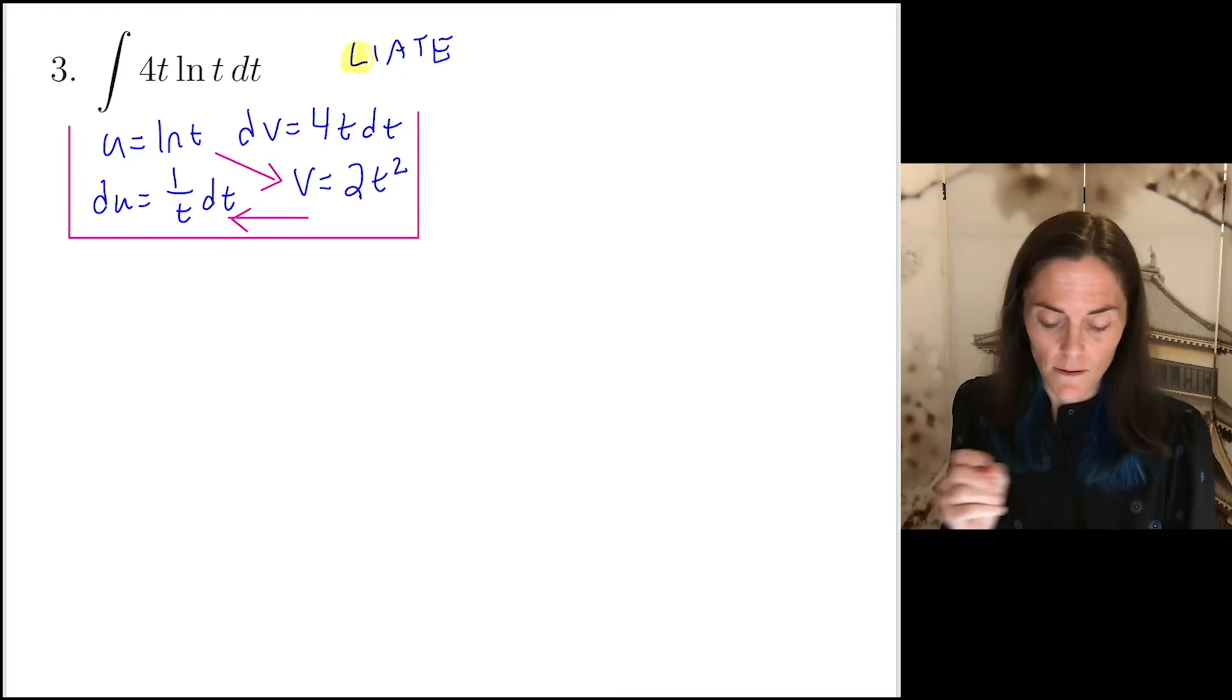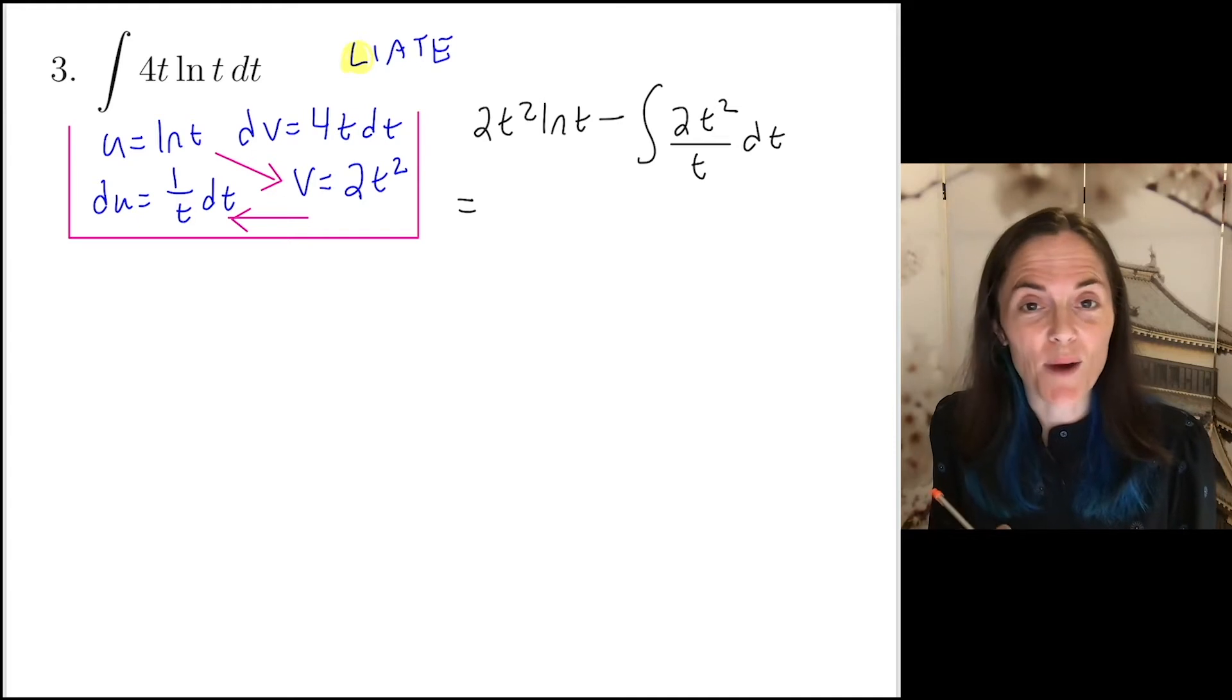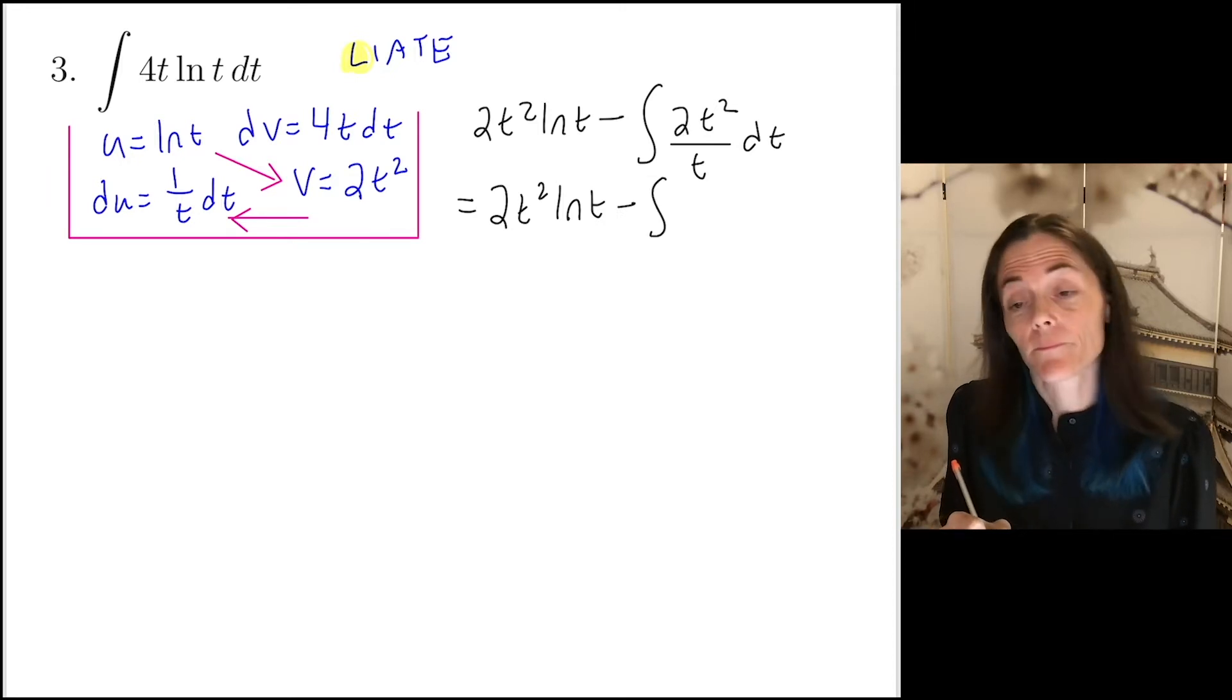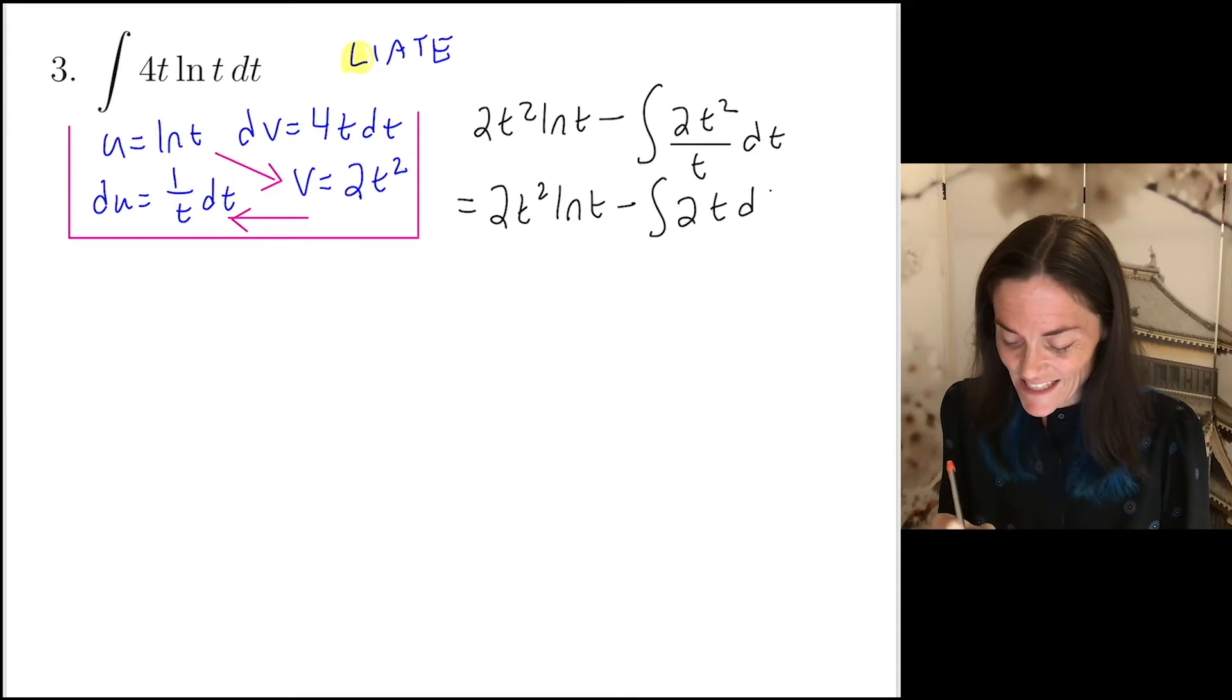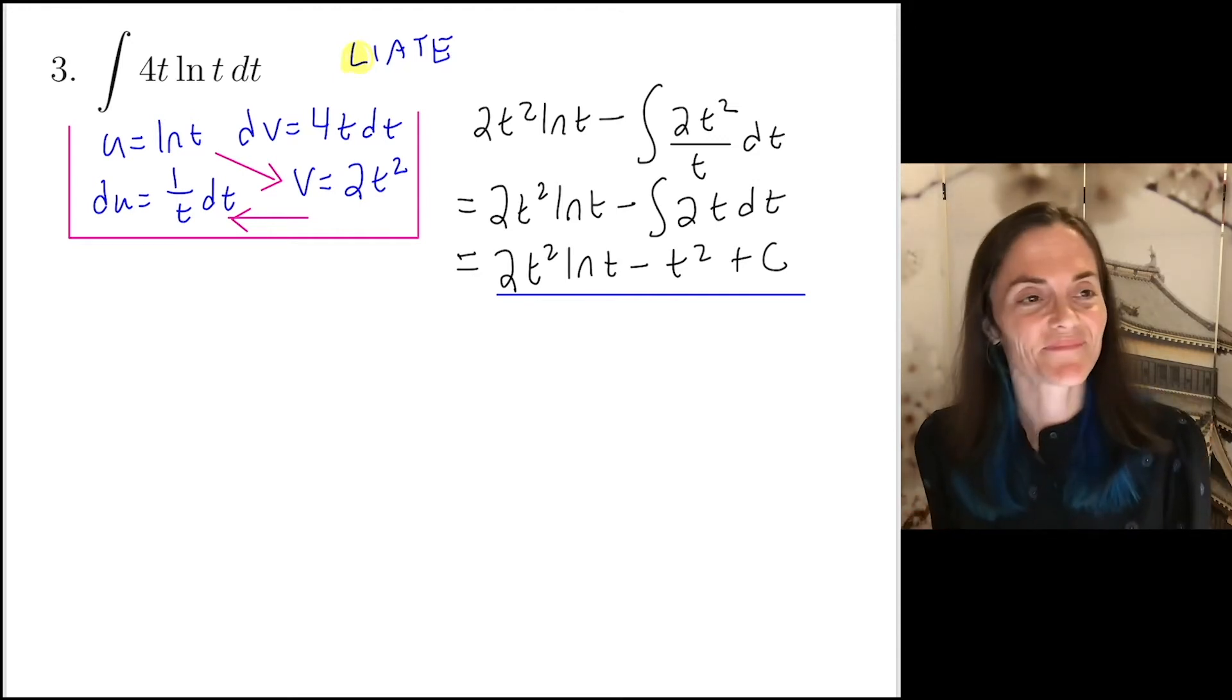Integration by parts goes uv minus the integral of v du. This is my box of work. So I have uv would be 2t squared ln t minus the integral of 2t squared over t dt. Now what I need to do is simplify this integral just using properties of exponents. We have 2t squared ln t minus, this will be just 2t dt. And now one more step and I've finished with this problem. We have 2t squared ln t and then minus t squared plus c. This one is number 3.